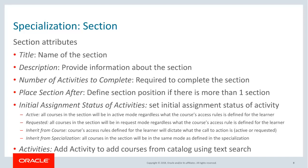The next step is to create one or more sections. To create a section, provide a title and description. Select the number of activities to complete, which can take values from 0 to all. If it is 0, the section is optional; if it is all, then all activities need to be completed. It could also be any value in between.